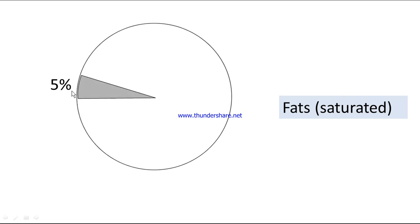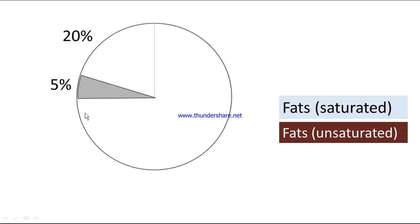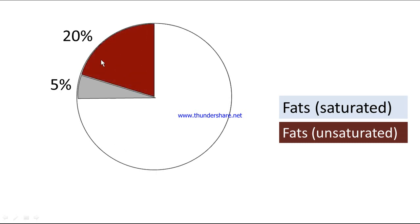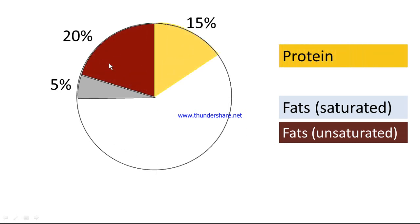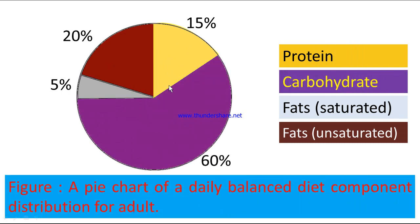The pie chart shows: saturated fat 5%, unsaturated fat 20%, protein 15%, and carbohydrate 60%. This is a pie chart of a daily balanced diet component distribution for adults.